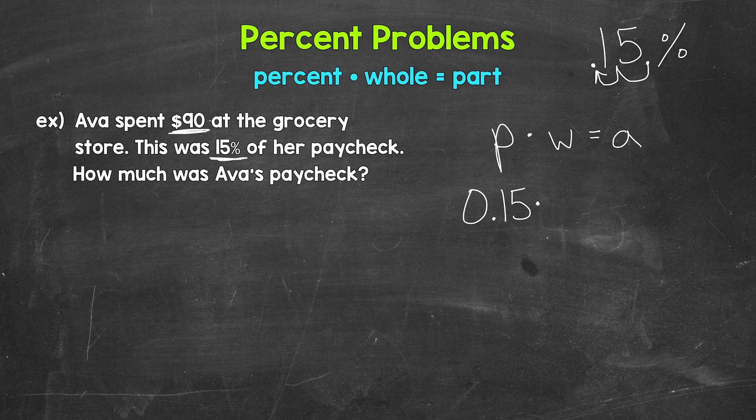But we do not know the amount of her whole paycheck. So the whole amount is unknown. So we can do 15 hundredths times the whole amount, which is unknown. So we leave our variable of W equals the part, which is 90.